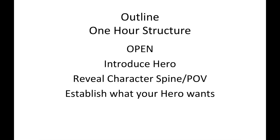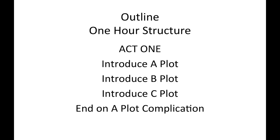In the open, you need to introduce the hero and at the very least reveal the character's spine — the unique point of view that makes us understand what makes this hero tick. You can also establish what your hero wants for the A-plot of that episode. In act one, you'll introduce the A-plot, B-plot, and C-plot. The B and C plots may be physical goals for other characters, or the A-plot might be a murder investigation while the B-plot is your hero trying to keep her marriage working. You want to end act one on the A-plot complication, as it is the most important subplot in your story.